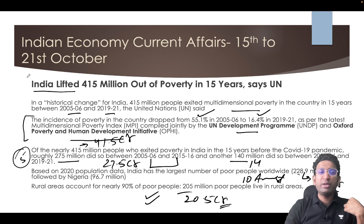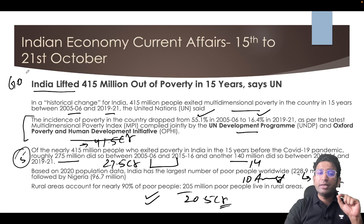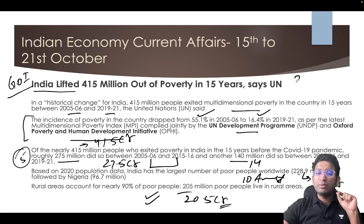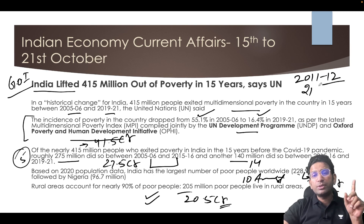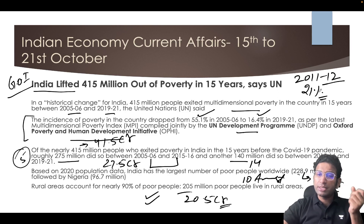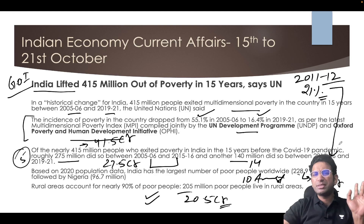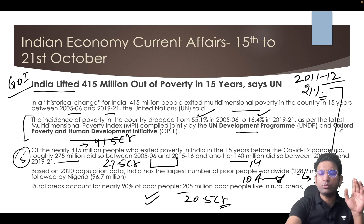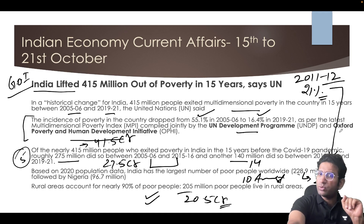India does not yet have any official government figure for people living below the poverty line. The last official estimate is from 2011–12, given by the Tendulkar Committee report, which put approximately 21% of people below the poverty line. Comparing with the MPI figure, the number has reduced to around 16%, meaning roughly a 5% reduction.